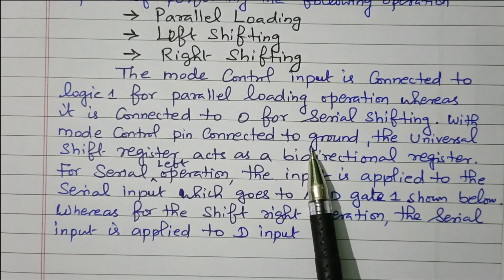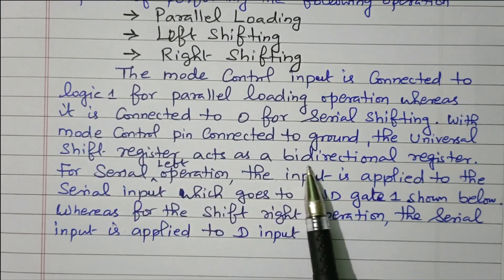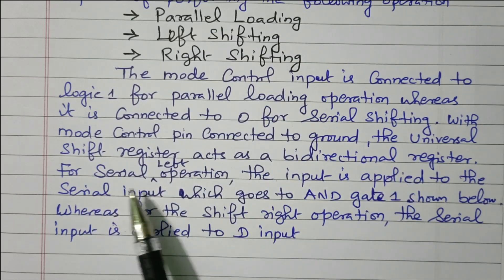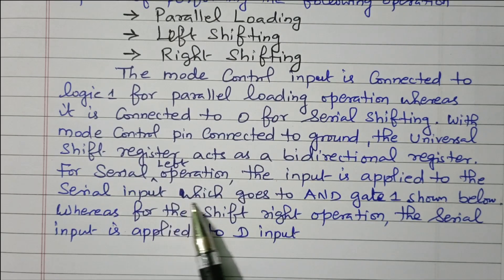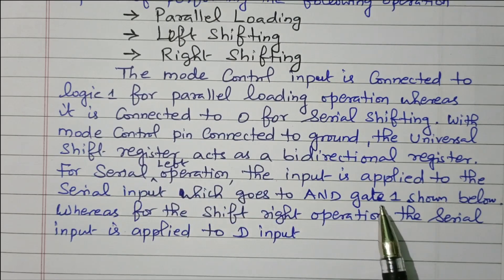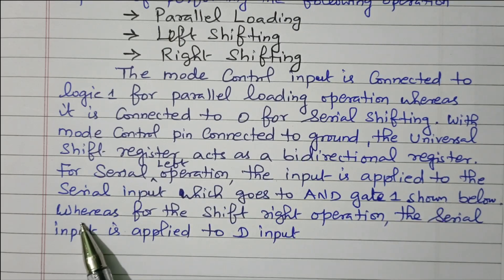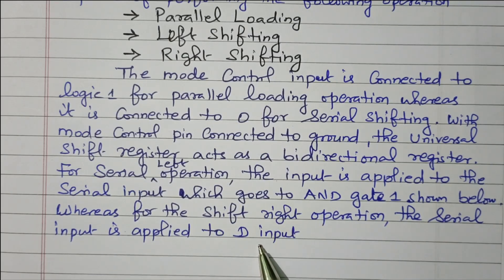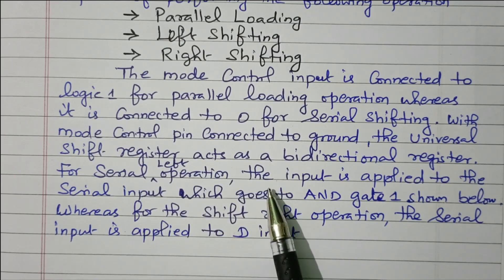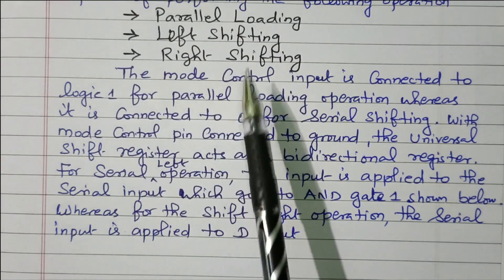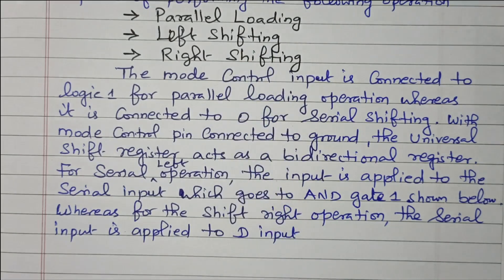When the mode control pin is connected to ground, the universal shift register acts as a bi-directional register. For serial left operation, the input is applied to the serial input going to AND gate 1. For shift-right operation, the serial input should be applied to the D input. We can perform parallel loading, shift-left, or shift-right — these three operations. Subscribe to the channel for more videos and notifications. Thank you for listening.